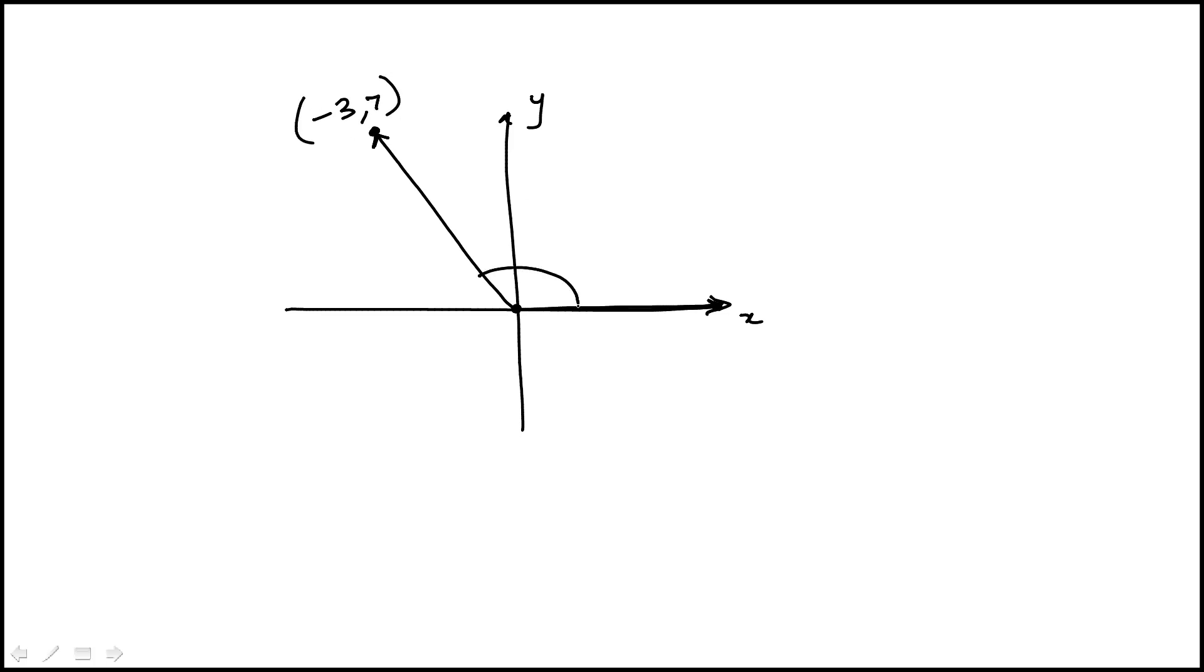This angle is alpha, so the question is: what is cosine of alpha? If we draw this point here, that's 3 units and this is 7, so we can find the hypotenuse using Pythagorean theorem. That would be square root of 49 plus 9, so square root of 58.